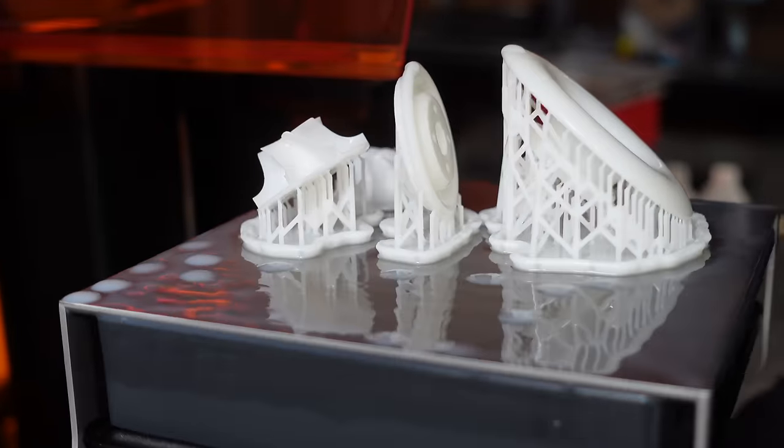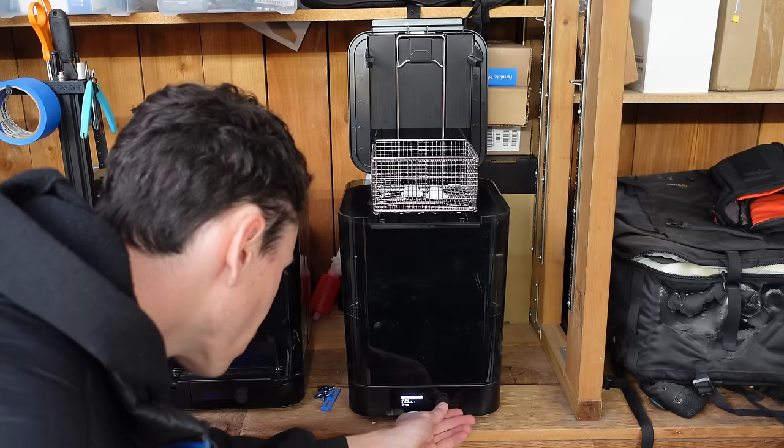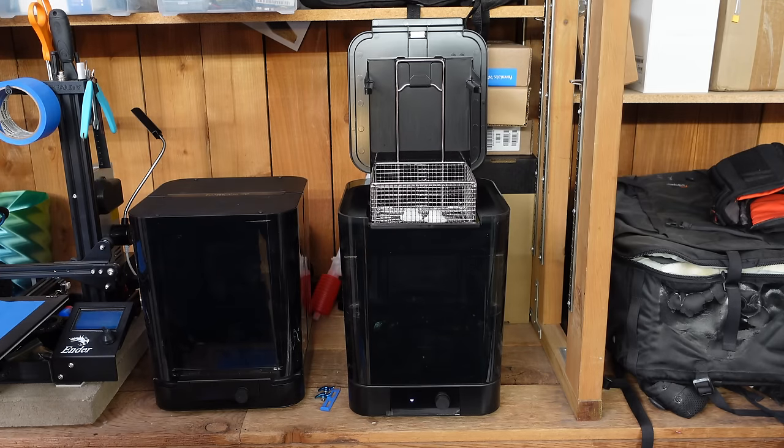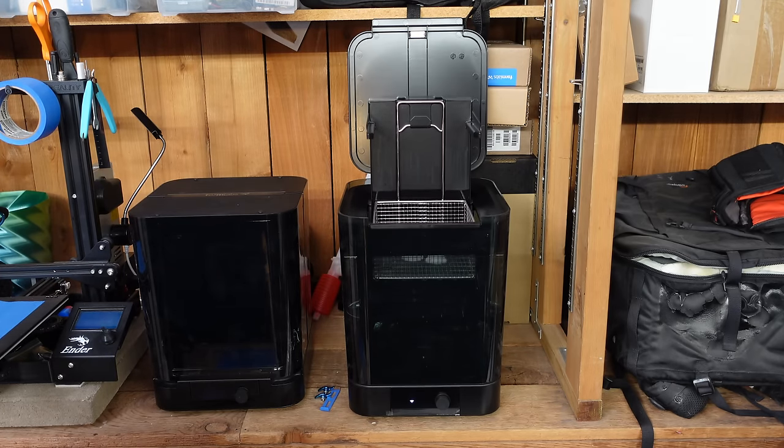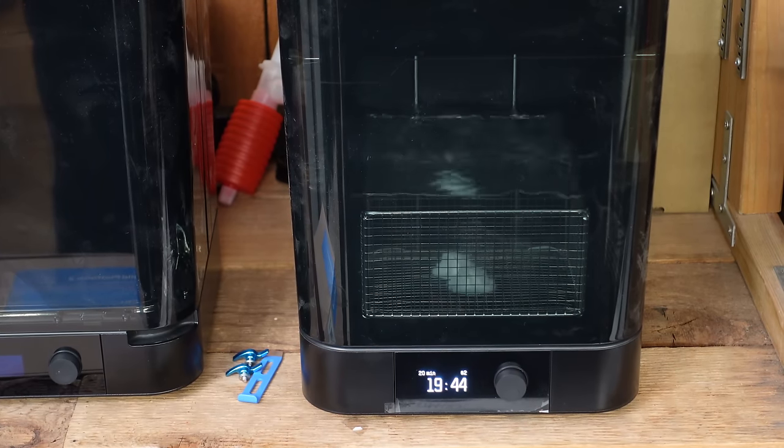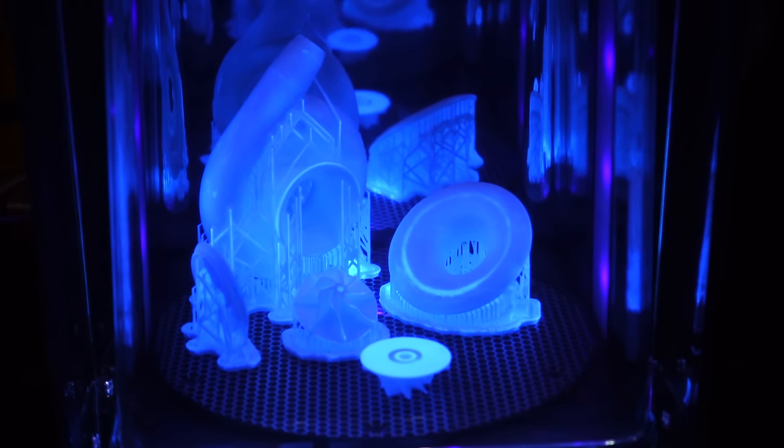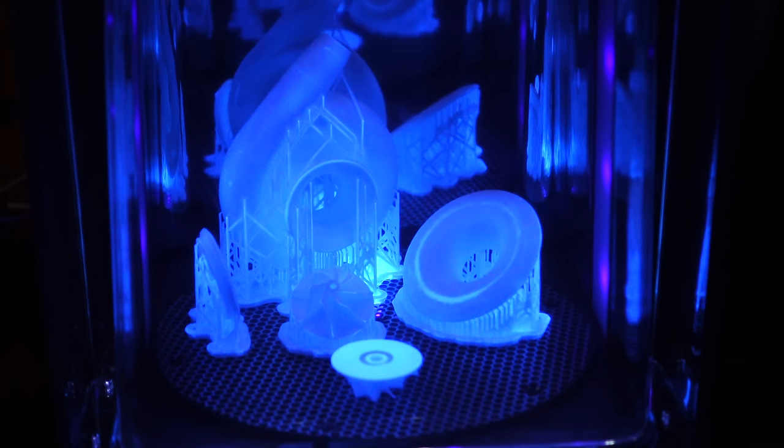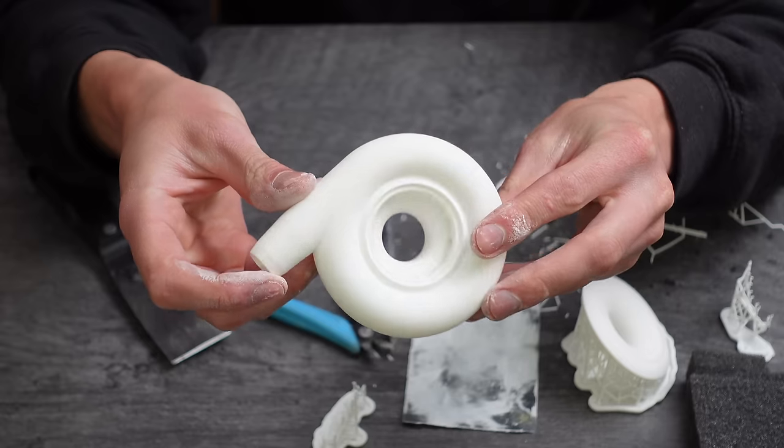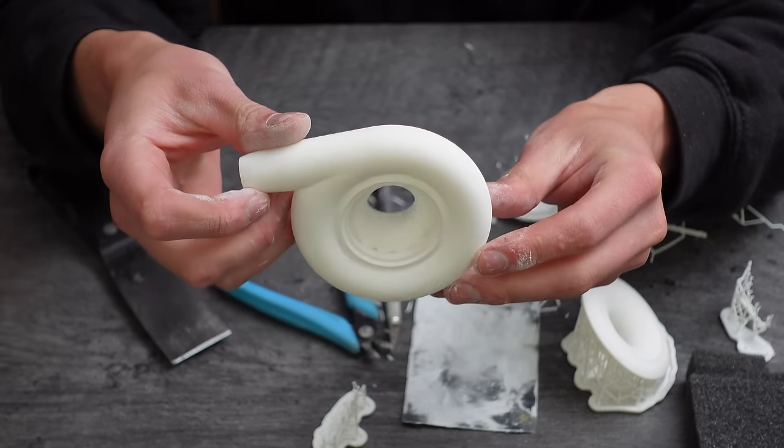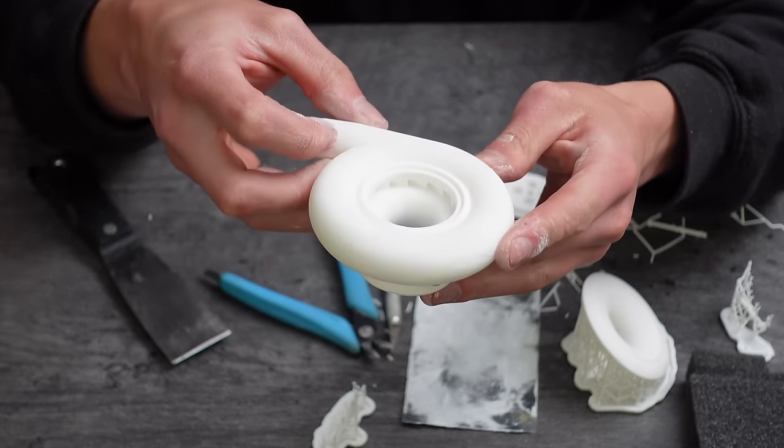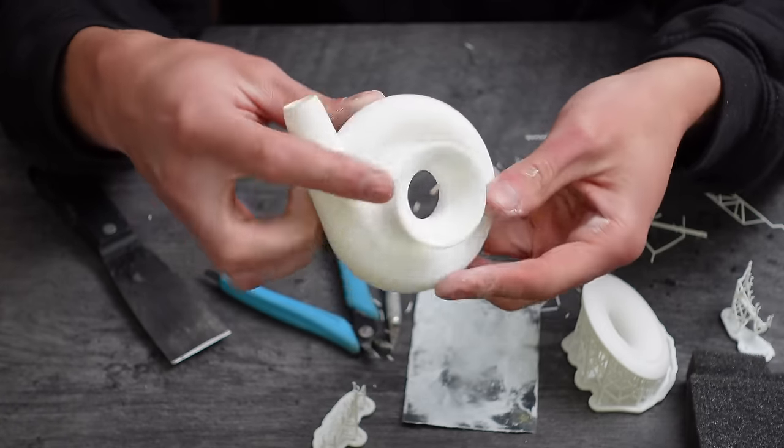To remove all the excess resin from the parts, Formlabs has this washer machine that circulates isopropyl alcohol over the parts and lifts them up out of the alcohol when their timer is done. After that, the parts go into the Form Cure, which uses heat and UV light to ensure all the resin is fully cured. After that, I removed all the support material and cleaned up the parts with some sandpaper. This RIDGID 10K resin almost feels like ceramic. It's really cool stuff.